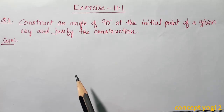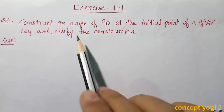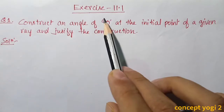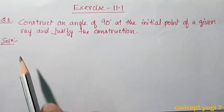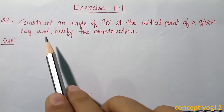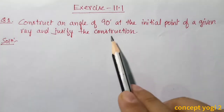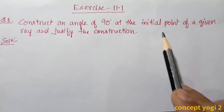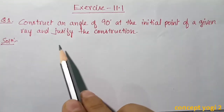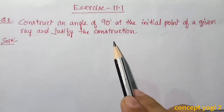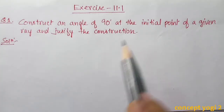Hi friends, in this video we shall solve class 9 maths exercise 11.1. Question number 1: Construct an angle of 90 degrees at the initial point of a given ray and justify the construction.